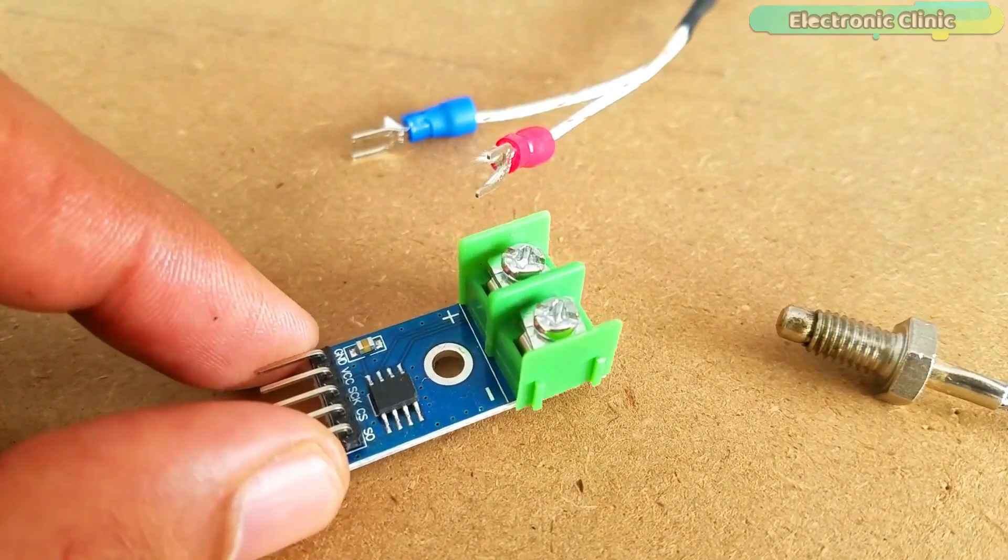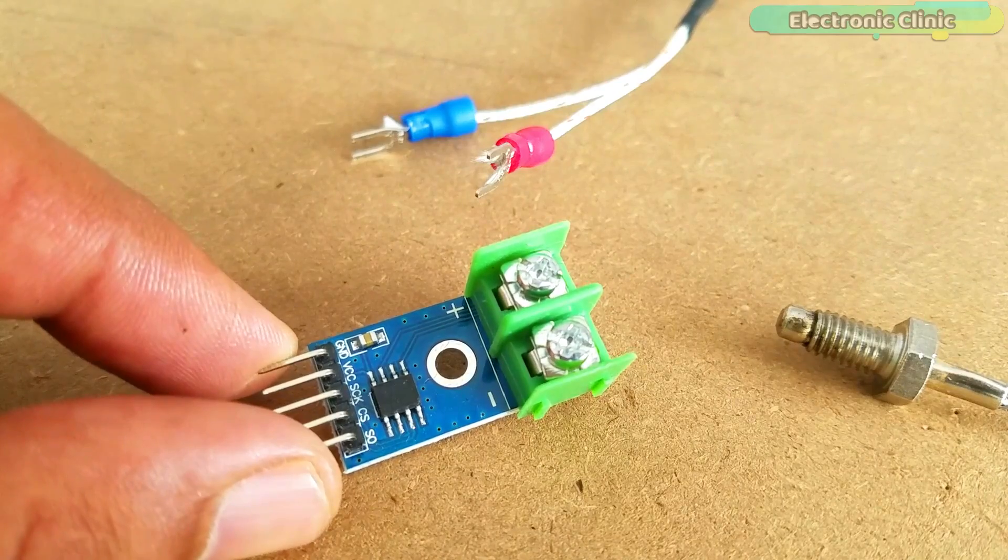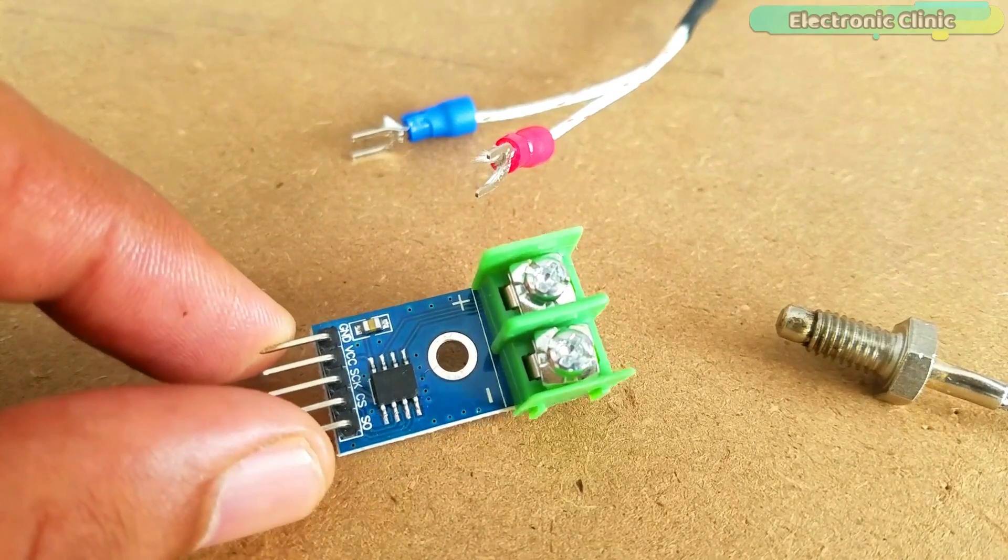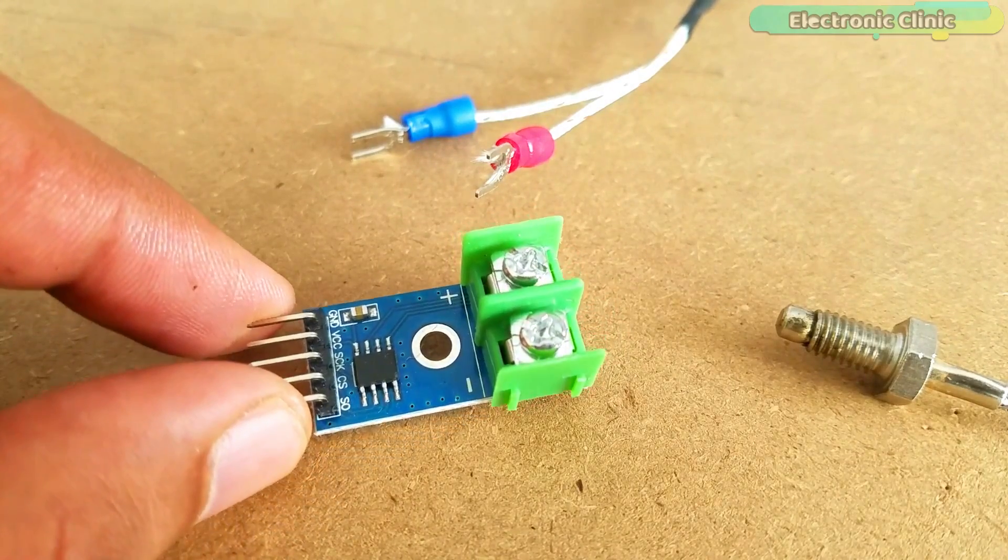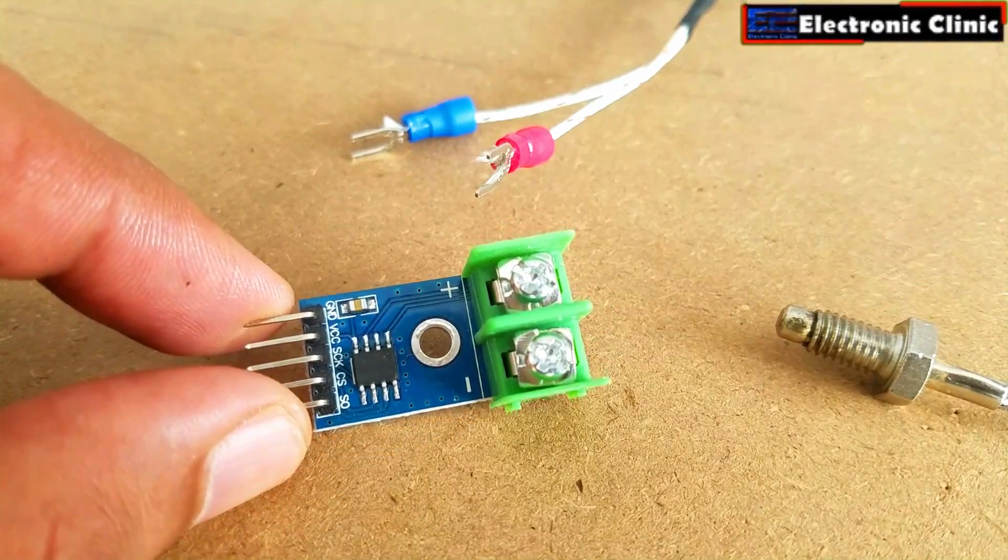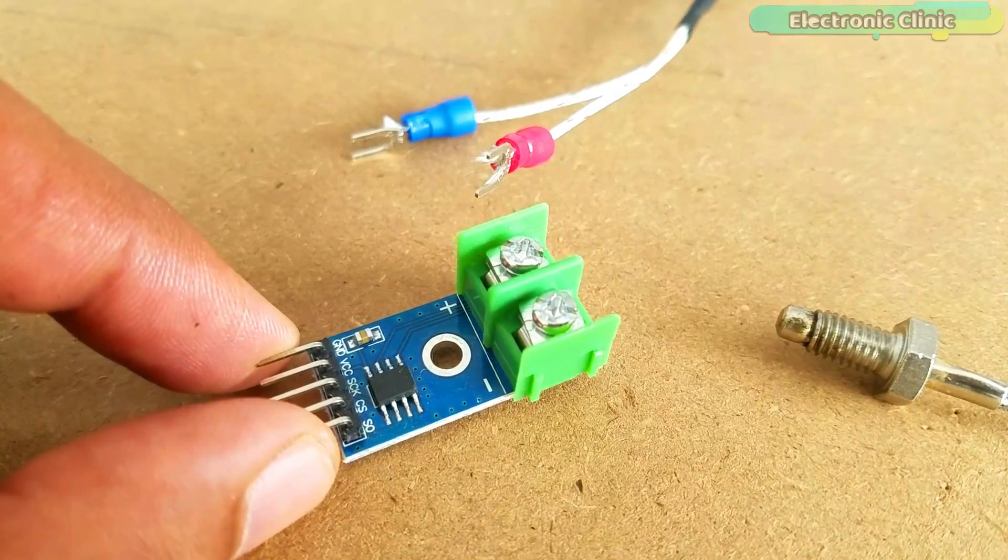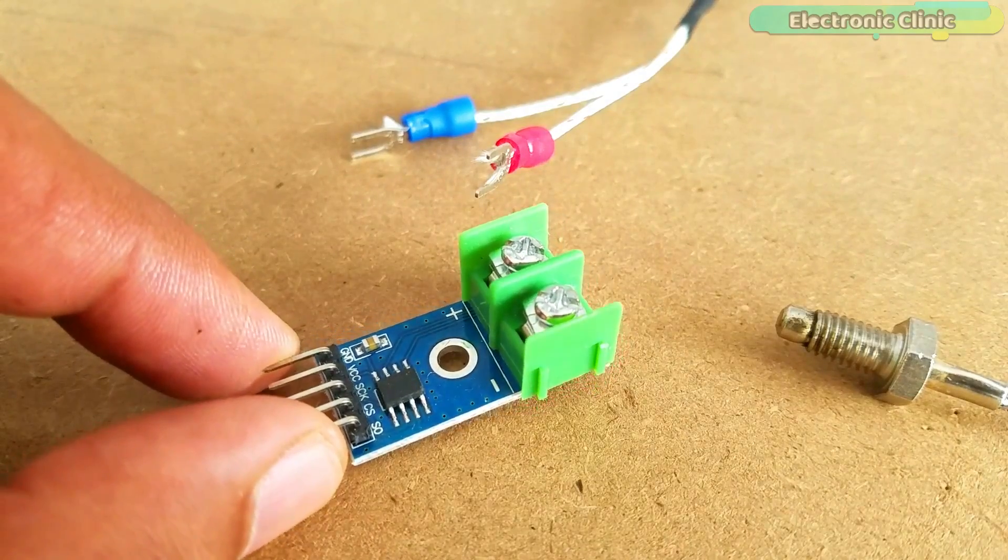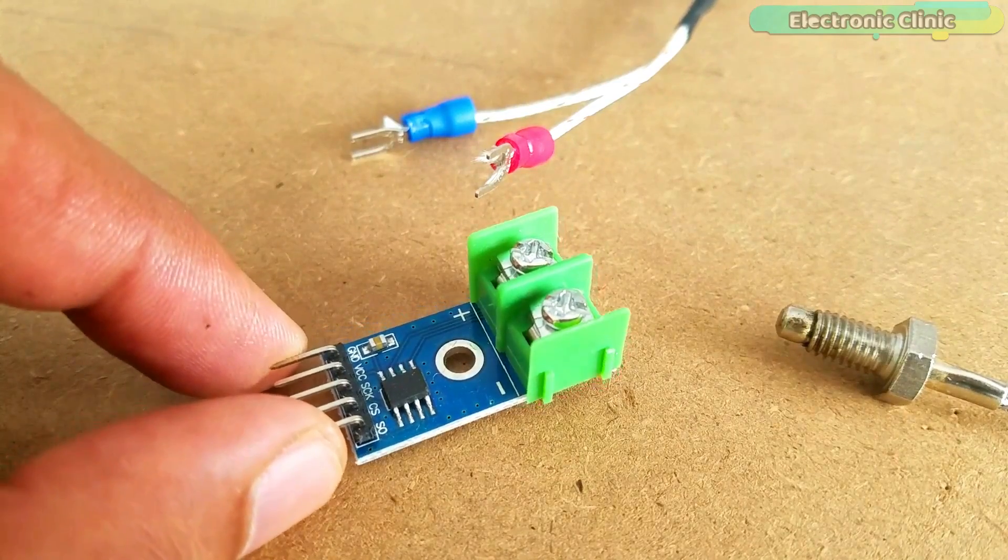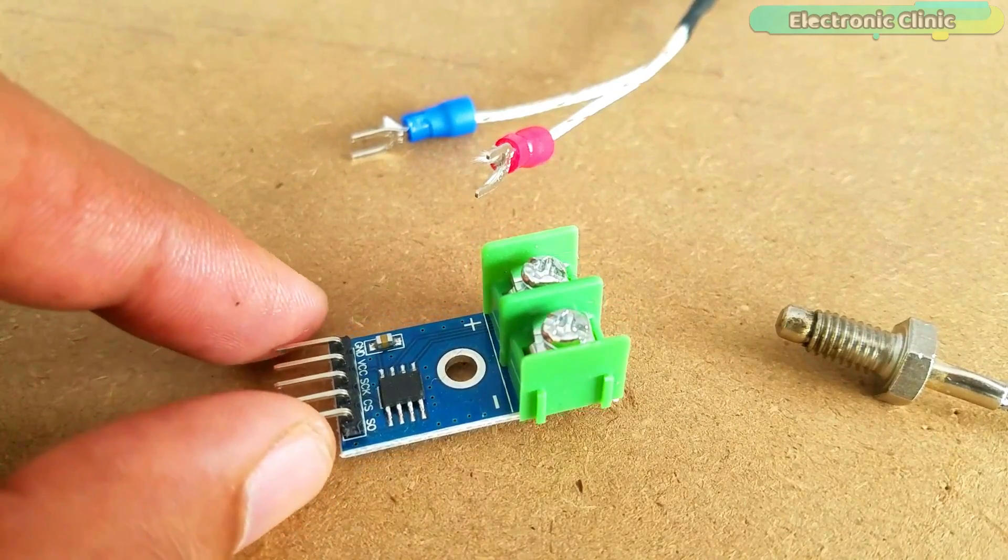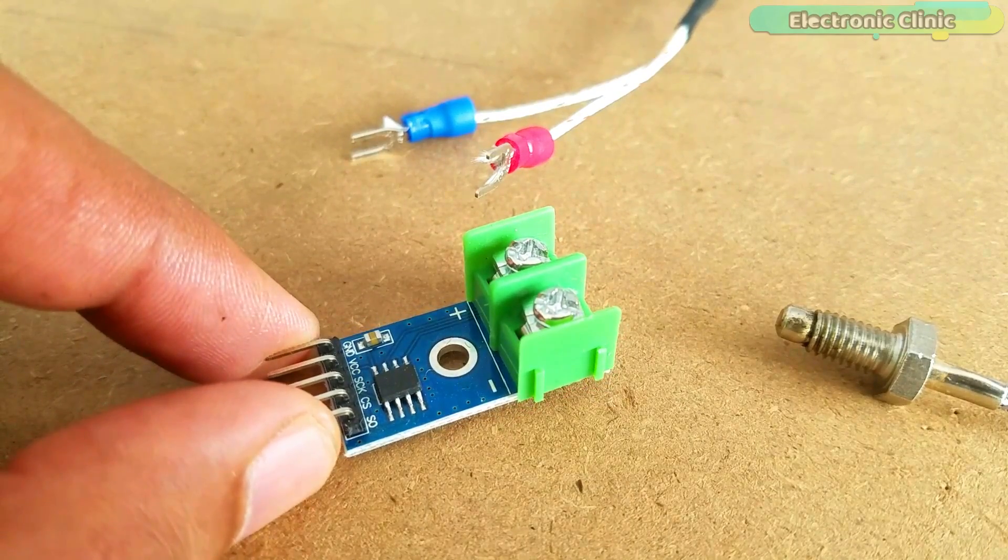This is the MAX6675 thermocouple temperature sensor amplifier. The temperature resolution capability of the MAX6675 breakout module is 0.25 degrees. The operating voltage is 3 to 5.5 volts due to which it can be used with 3.3 volt compatible controller ports like NodeMCU, ESP8266 module, ESP32 and so on. This module needs around 50 mA.